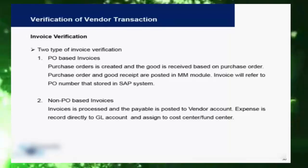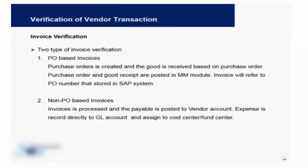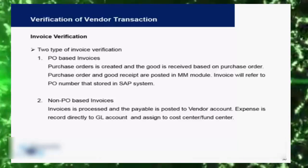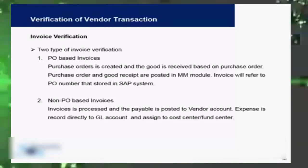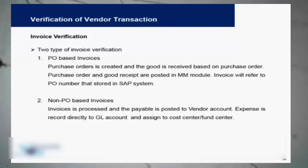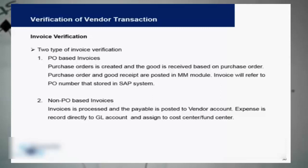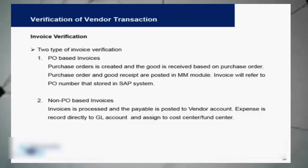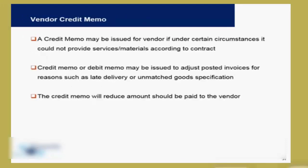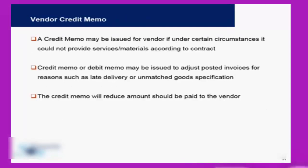There are also non-PO-based invoices, where invoices are processed and paid only on the basis of the vendor account directly. This covers expenses which do not have a purchase order, like rent or utility bills. These are directly posted to the GL accounts of the particular expenses. After you post an invoice, there can be a situation where you want to reverse a partial or the total invoice.